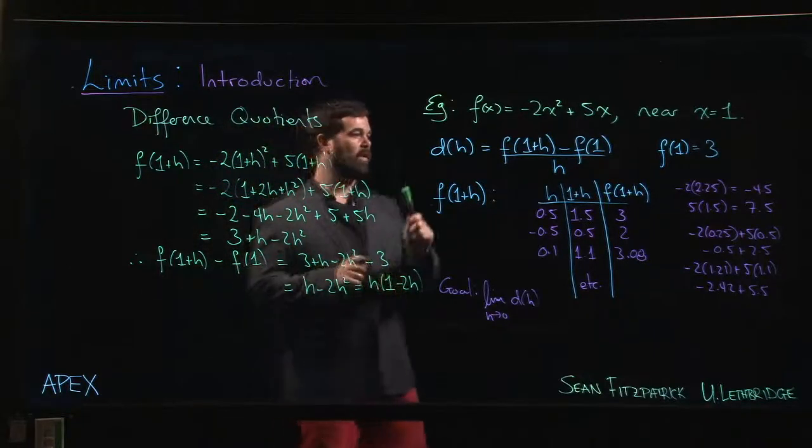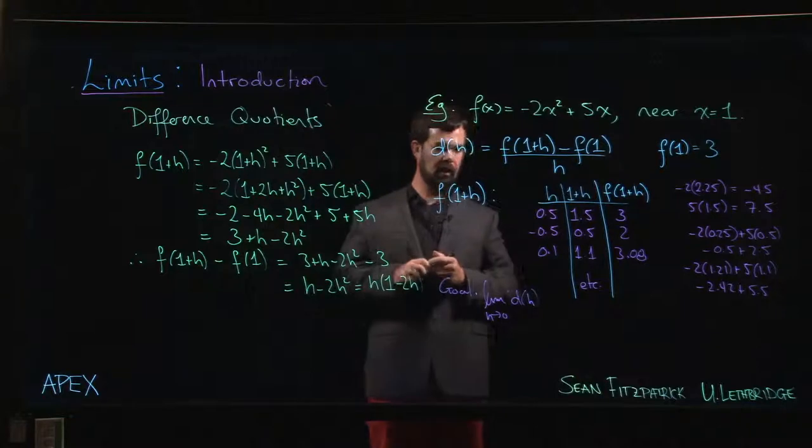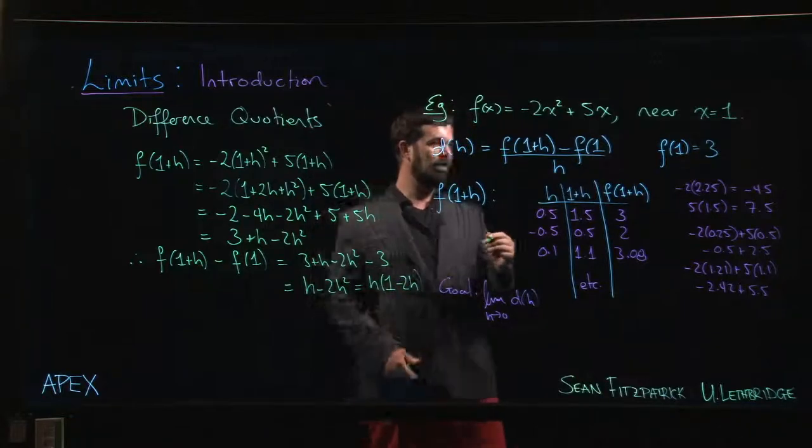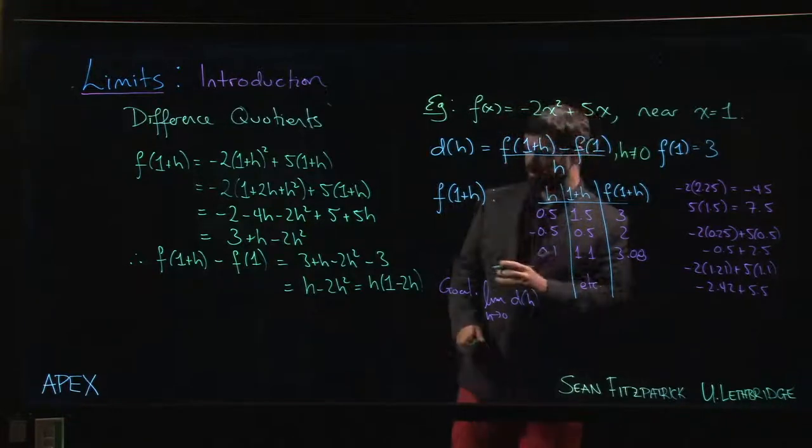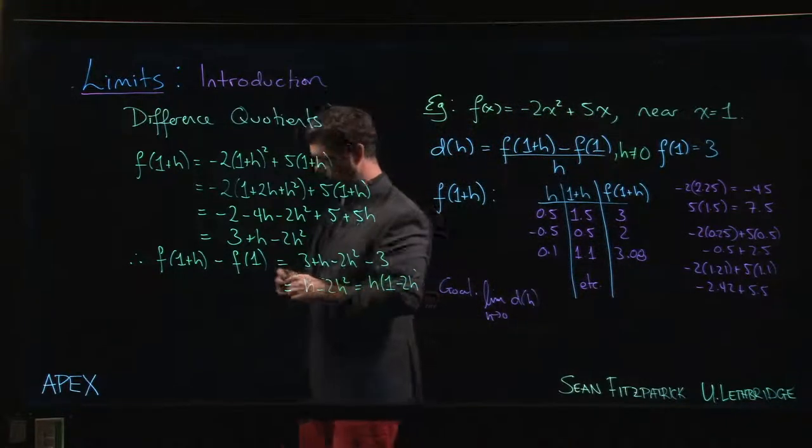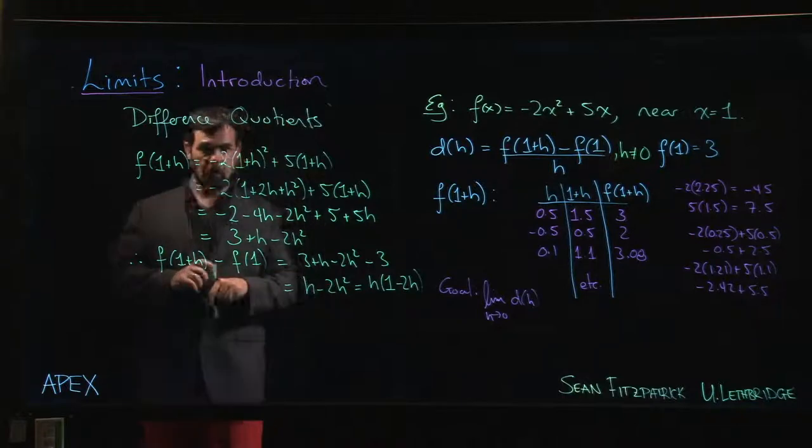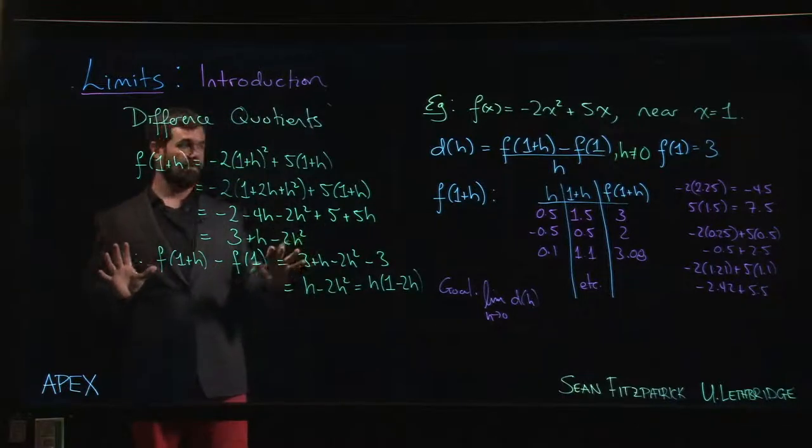Remember that we're computing this difference quotient, and remember that we're doing this when H is not equal to 0. So since we're not considering 0 as a value, we're sticking to H not equal to 0.